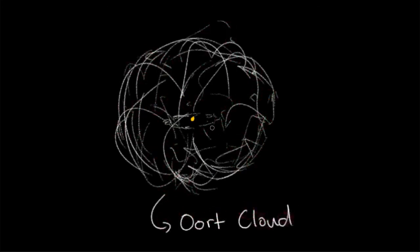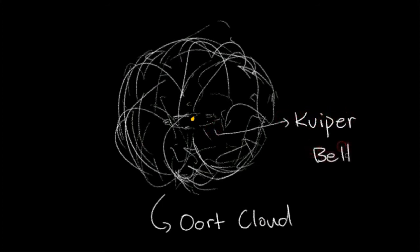This also accounts for why the ring of debris surrounding the solar system today, known as the Kuiper Belt, contains less material than expected.